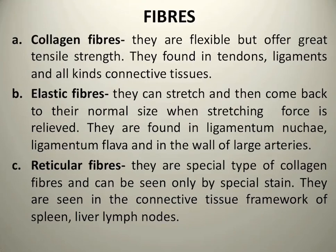Next are fibers — we have discussed cells, now next are fibers. The first one is collagen fibers. They are flexible but have very high tensile strength. Collagen fibers are found in tendons, ligaments, and all types of connective tissue. Collagen fibers are produced from fibroblasts, which are the stem cells for production of collagen fibers.